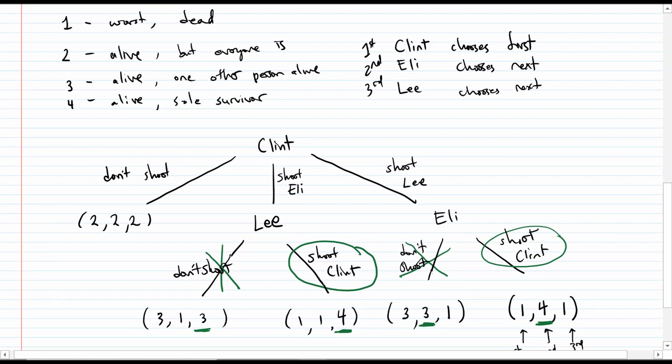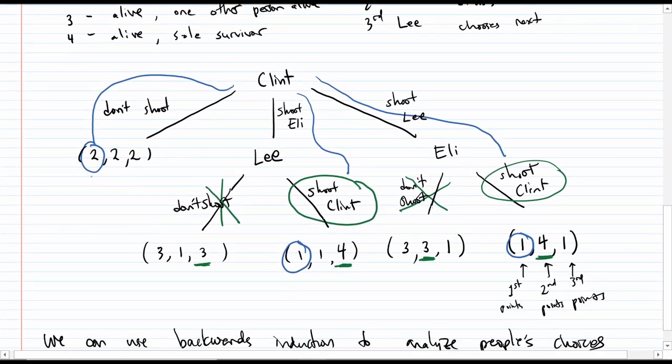So Clint then should choose not to shoot, because if he doesn't shoot, then he at least won't get shot himself. And what will other people choose to do? Well, if Clint doesn't shoot, then Eli will also follow suit and not shoot, because Eli realizes that if he shoots anyone, then the last remaining person will also shoot him, and so on and so forth. So if Clint decides not to shoot, then in fact, everyone will stay alive. If everyone is alive, then they all get scores of two. So now Clint can look at his three choices. If Clint chooses to not shoot, he'll end up with a score of two. If Clint chooses to shoot Eli, he'll get shot himself and end up with a score of one.